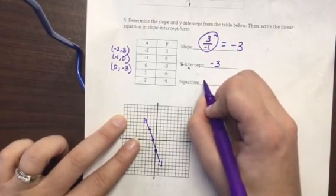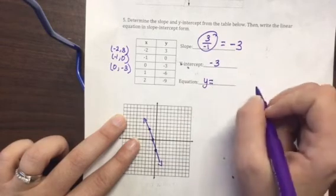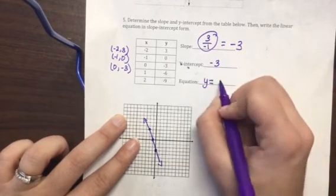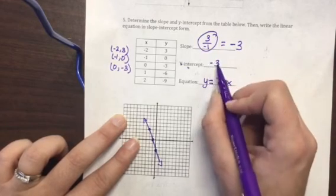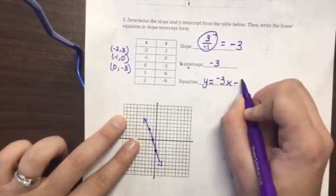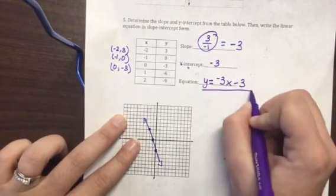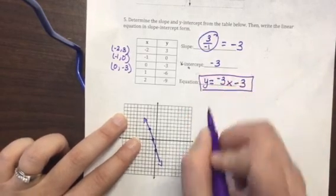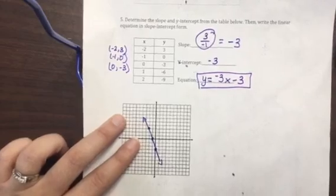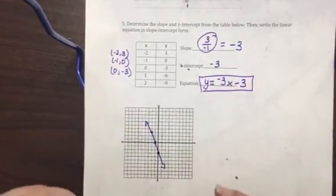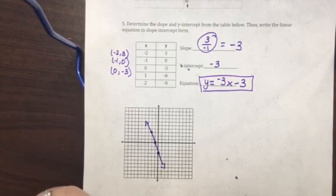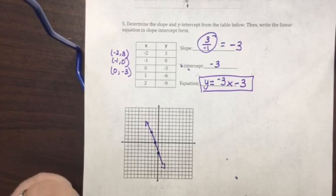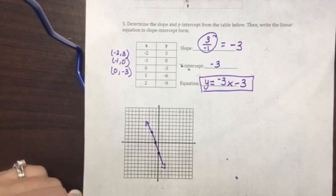Alright? So my equation always starts with y equals. My slope, I said, was negative 3 times x. And then since I have a negative y-intercept, I'm going to say minus 3. So make sure that you have all of these correct and you feel confident. Once you're ready, put everything away. You may not use notes for your quiz. Get out a pencil, raise your hand, and a teacher will bring you your quiz. Good luck.